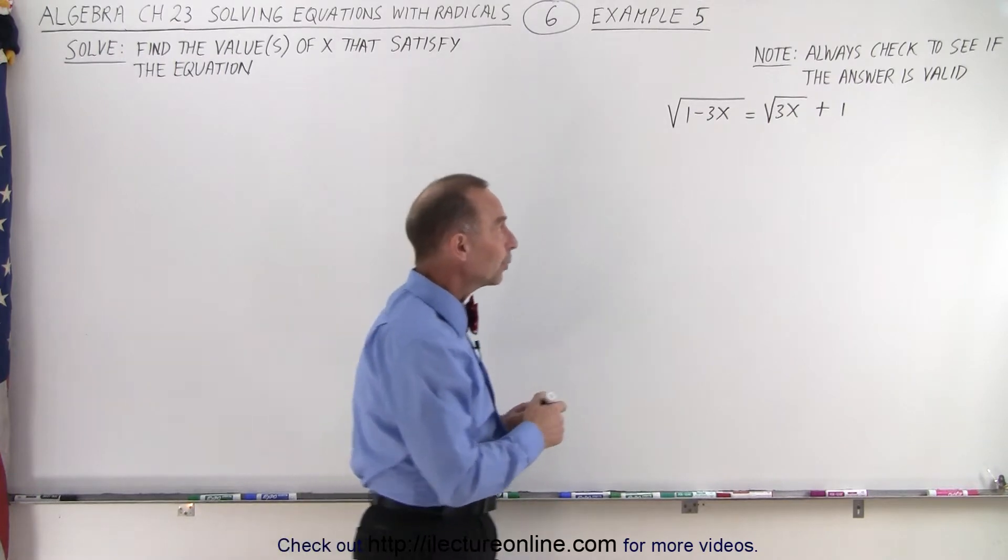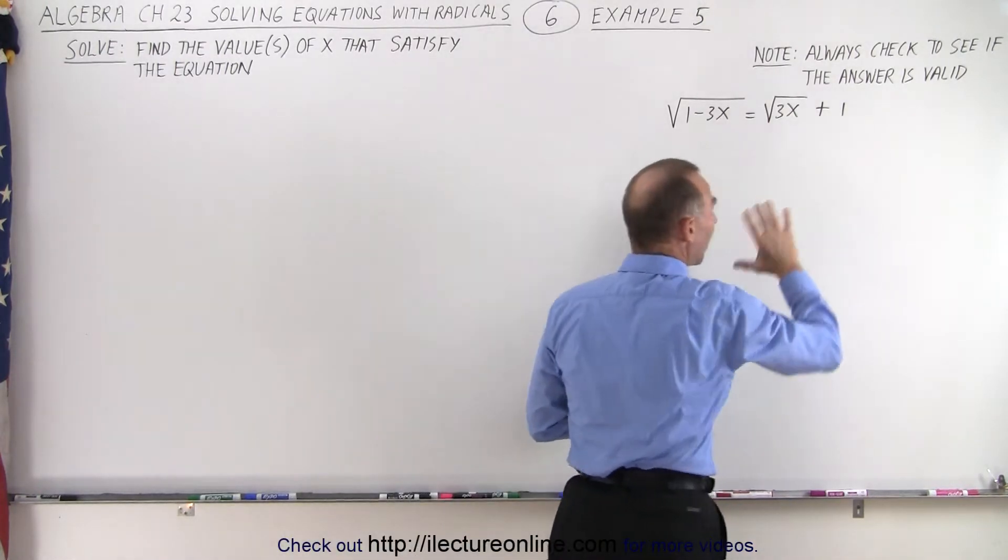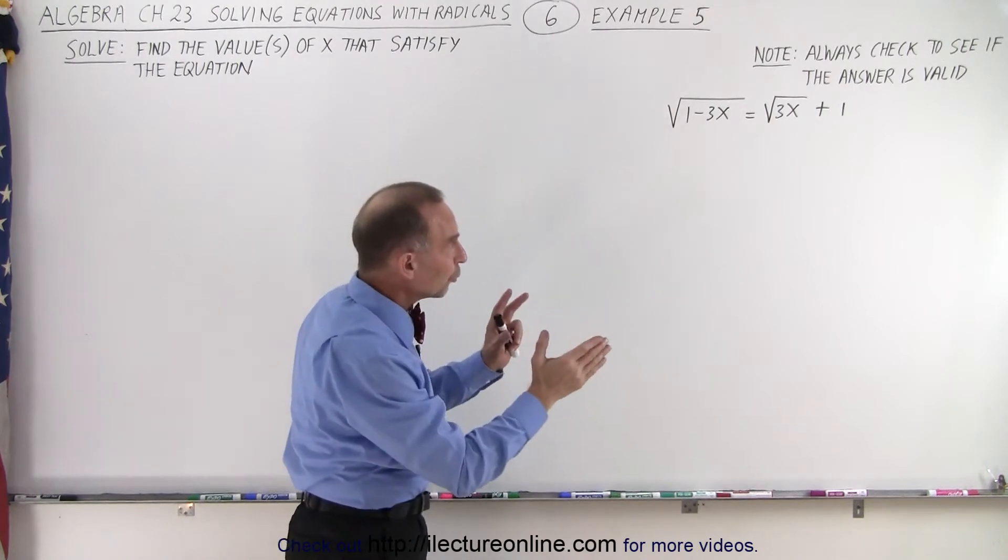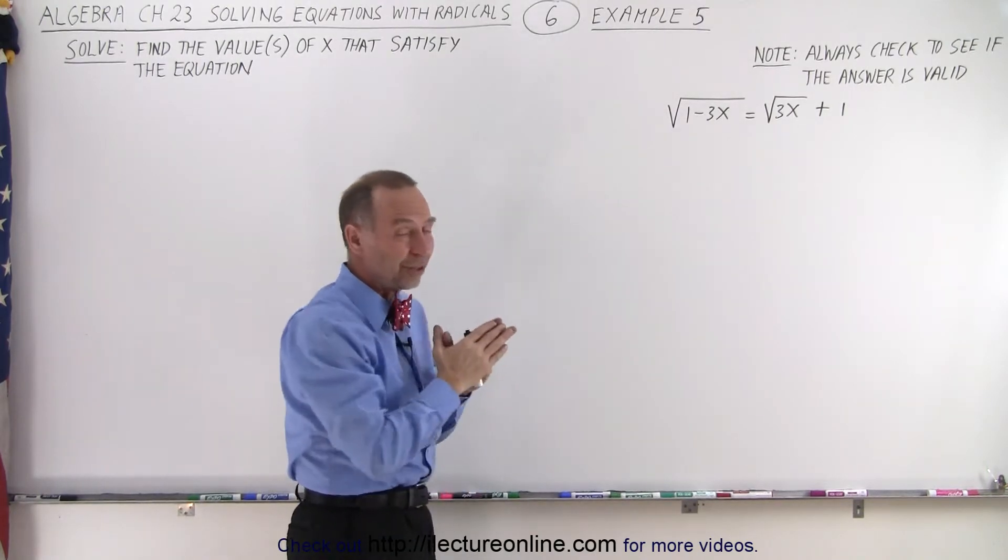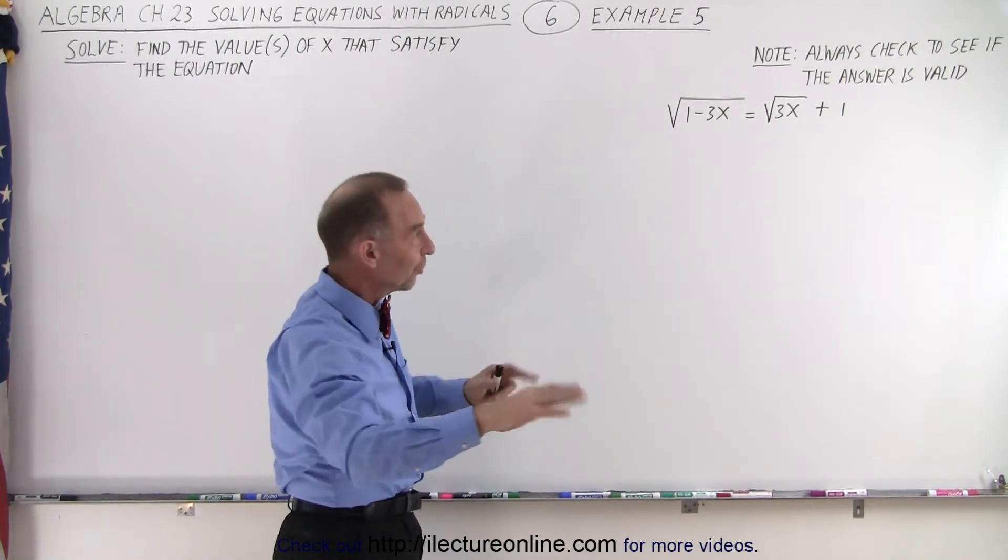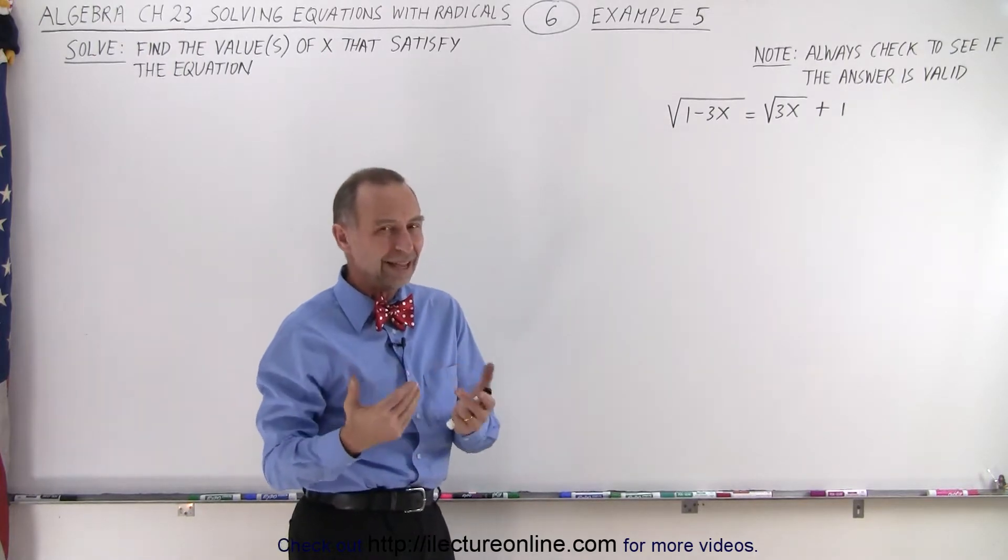Now, on the right side, we also have a plus one term, which complicates things a little bit. Even if both of those radicals were on one side, you still probably want to separate them first before you square both sides. The rule is the same.